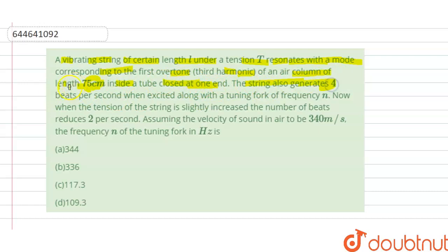The string also generates four beats per second when excited along with a tuning fork of frequency n. Now when the tension of the string is slightly increased, the number of beats reduces to 2 per second. Assuming the velocity of sound in air is 340 m/s, the frequency n of the tuning fork in hertz is: